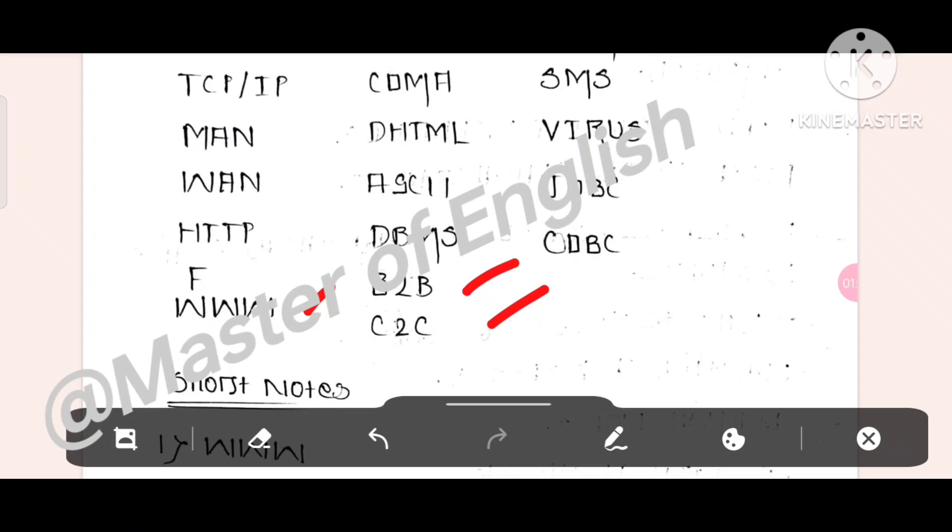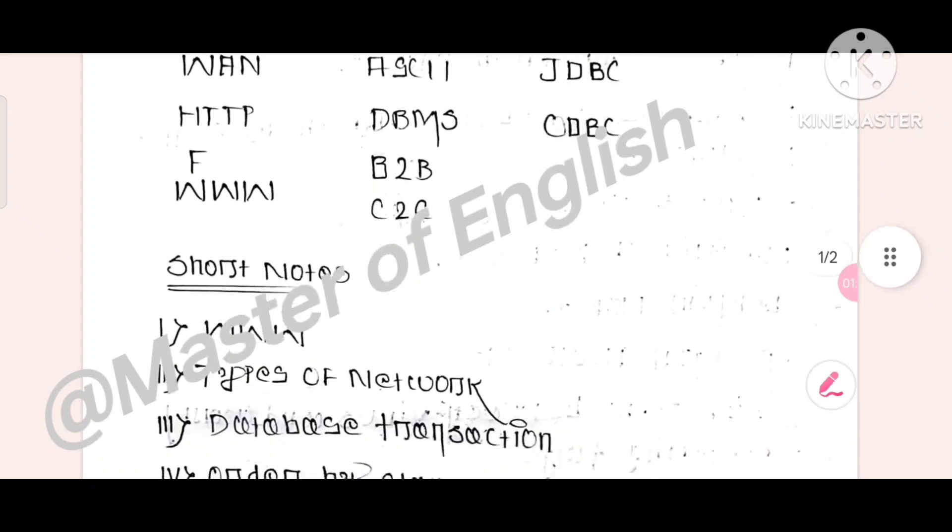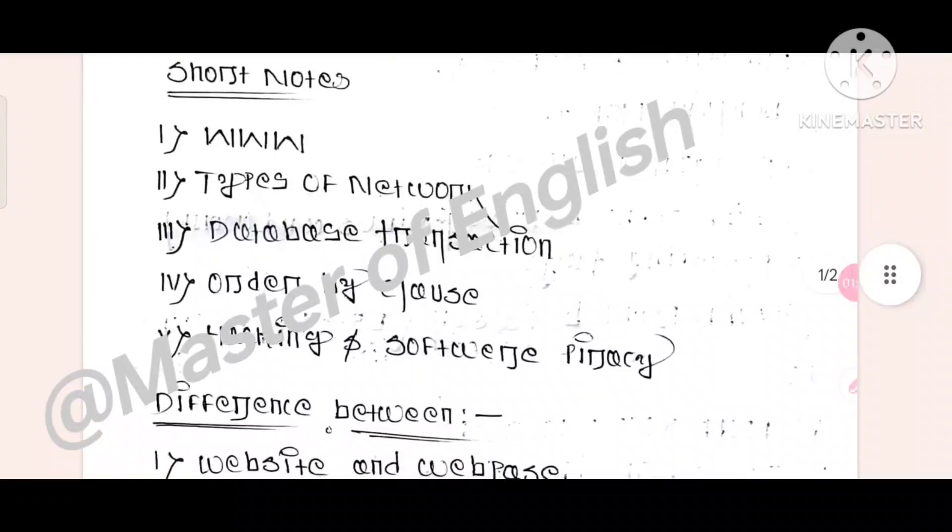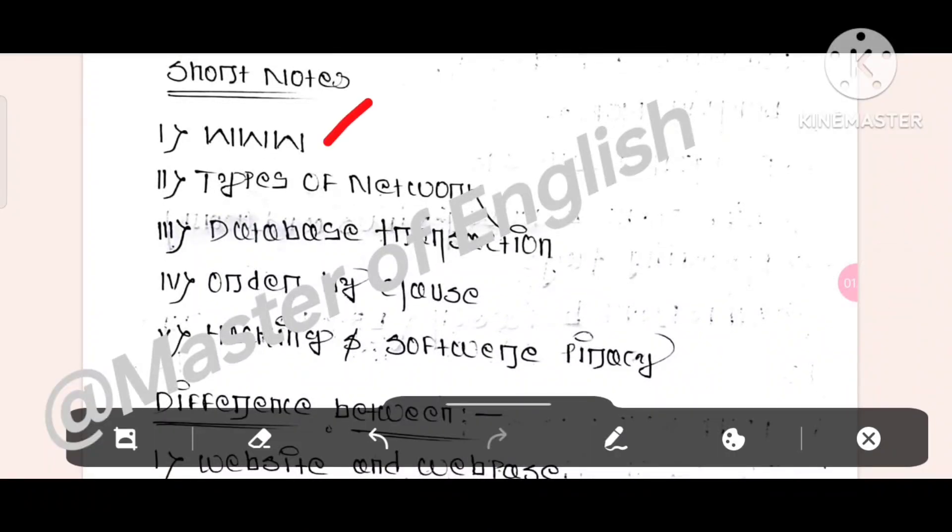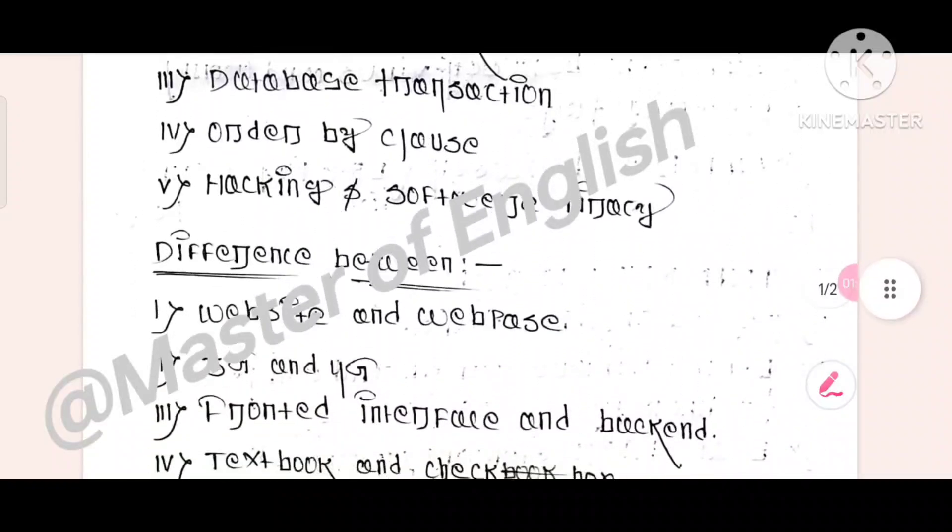Okay, then you can see short notes. What are the probable short notes? First of all, WWW, two types of network, database transaction, order by clause, then hacking and software piracy.